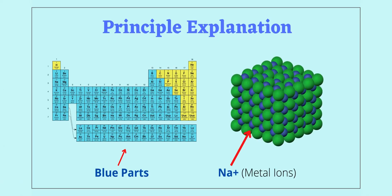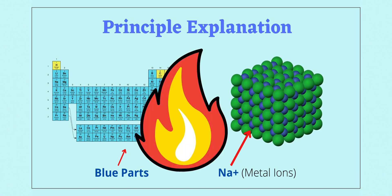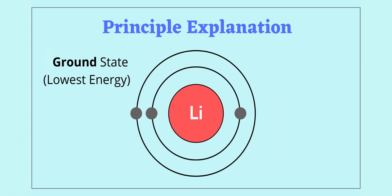Metallic elements or substances containing them differ in the color of the flame that appears when put into the flame. To know why, you first need to know that atoms initially maintain a ground state, in which electrons are placed in the lowest energy state.